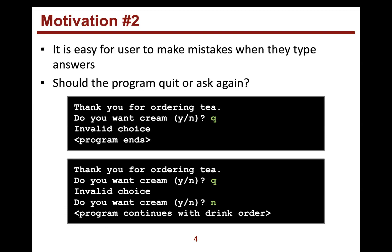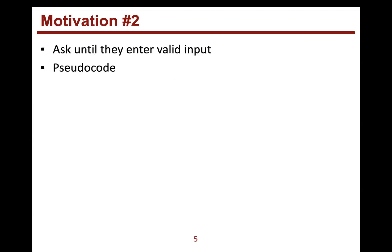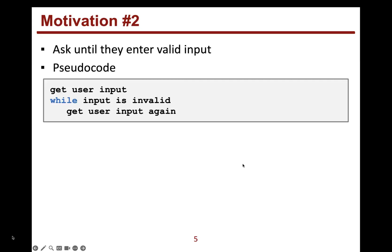So this is what we want to do — we can use loops to do this. We're going to ask until they enter valid input. Here's some pseudocode: we basically want to get input from them, and we want to loop while their input is invalid. While it's not what we want, we're going to ask them to input again.